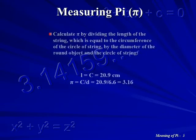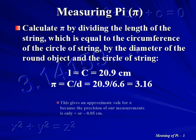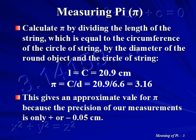Pi can be calculated by dividing the length of the string, which is equal to the circumference, C, by the diameter, D, of the spray can. This gives an approximate value for Pi of 3.16. This is because the precision of our measurement is only plus or minus 0.5 centimeters.